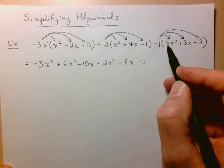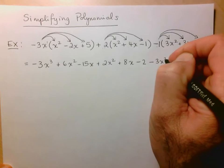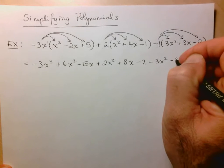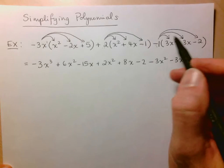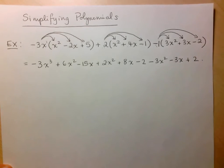Negative 1 times positive 3, well, it just gives me negative 3. And of course x squared. Negative 1 times positive 3, again, negative 3 and x. And now negative 1 times negative 2 just gives me positive 2.